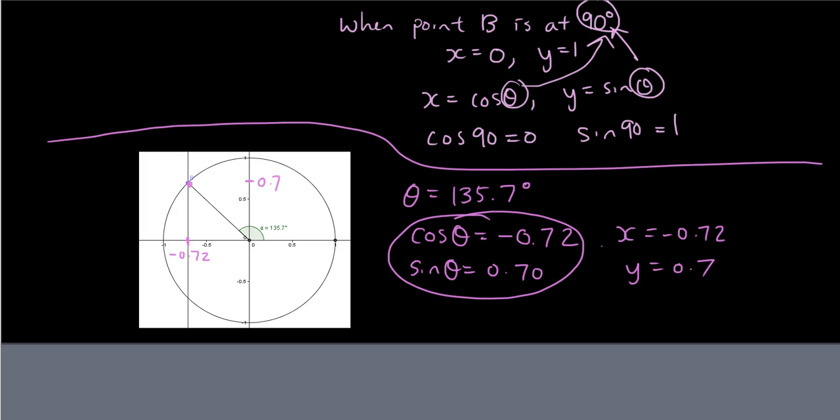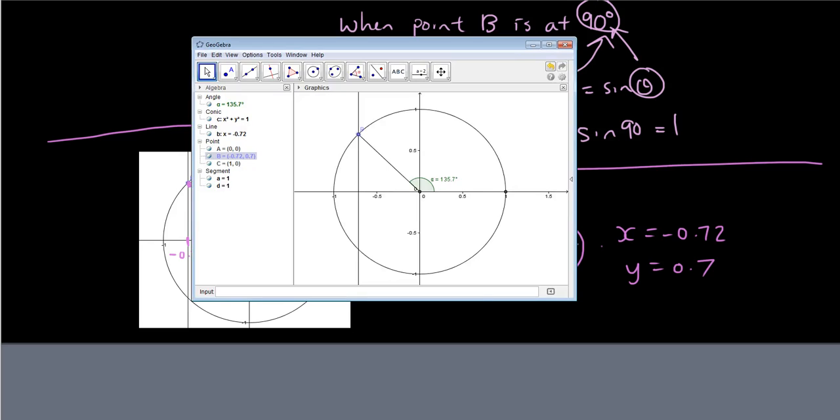So x equals negative 0.72, y equals 0.7 on our unit circle. Alright so that is why when you type in the calculator cosine 135.7 the answer is negative 0.72. And so using the same concepts we can drag this point to bigger than 180 degrees and we will be able to find an answer for cosine 218 and sine 218.